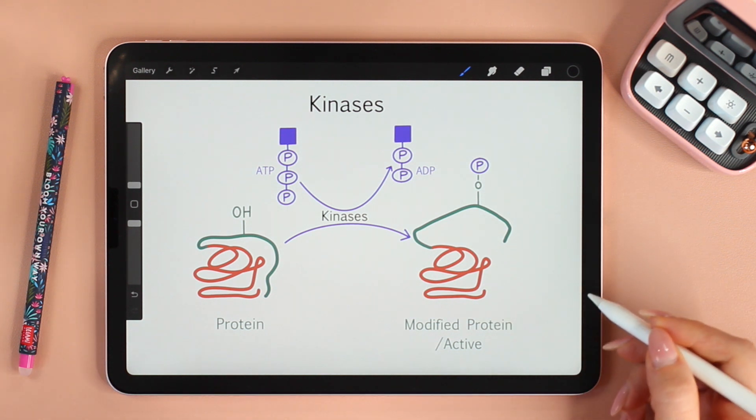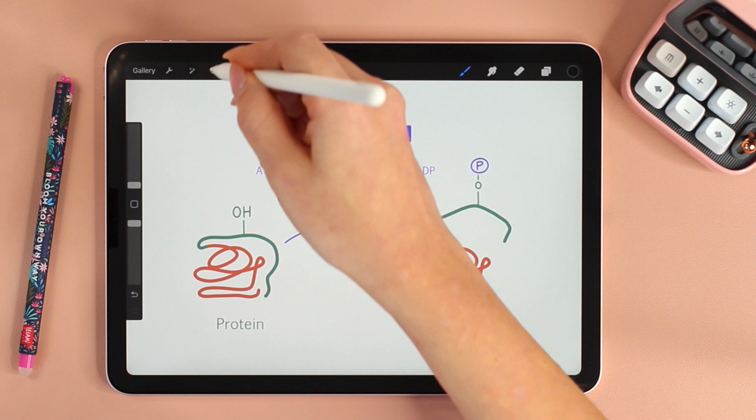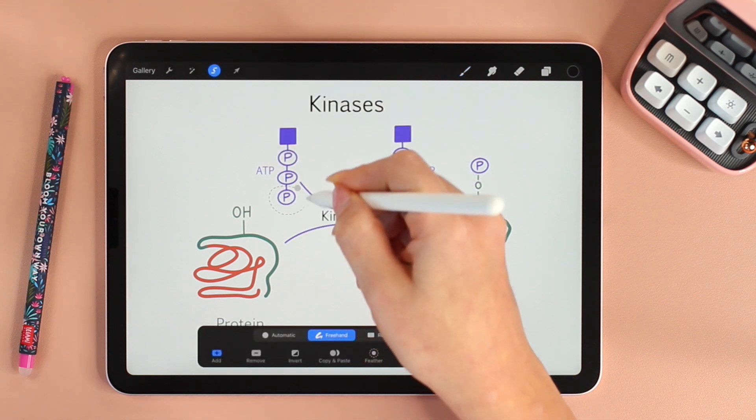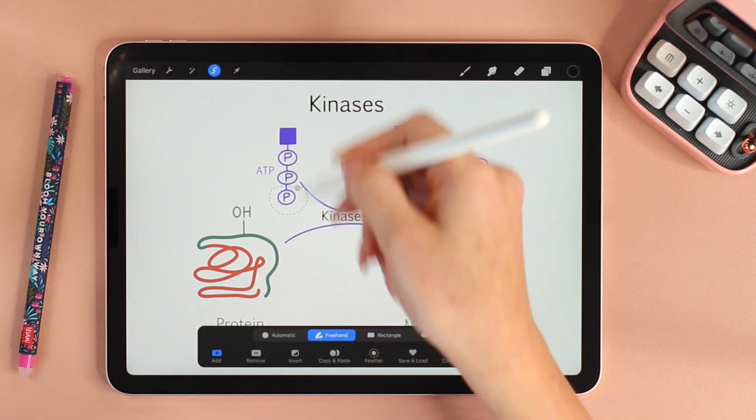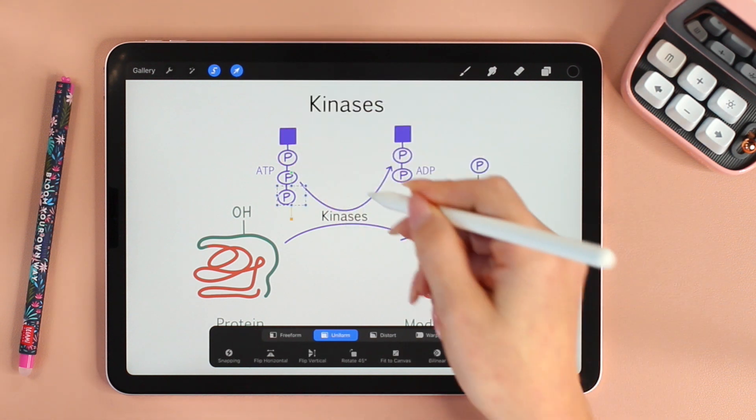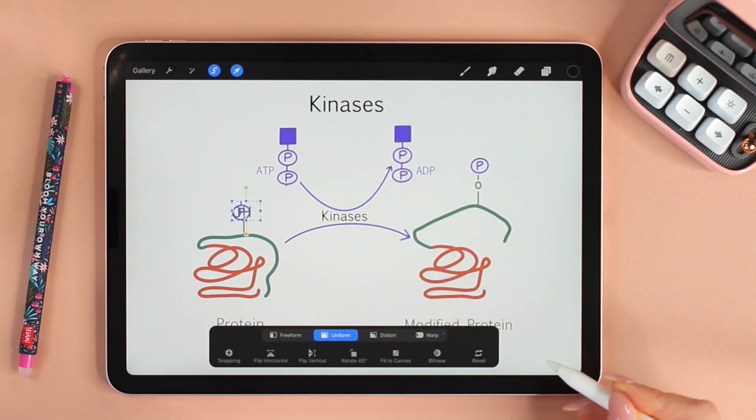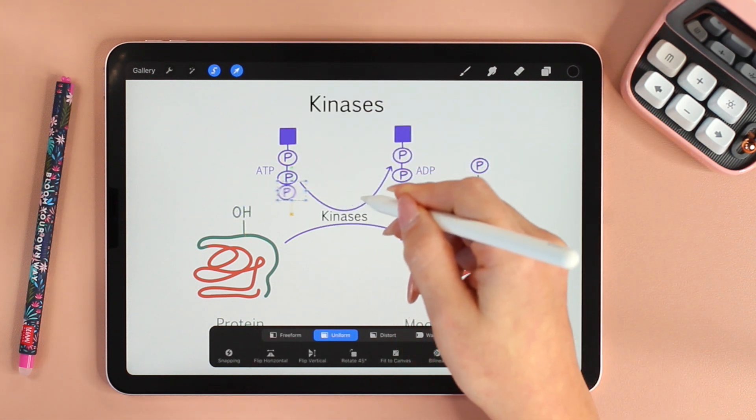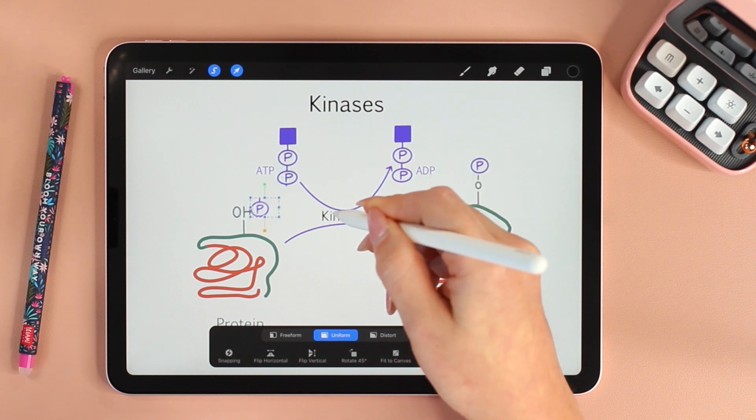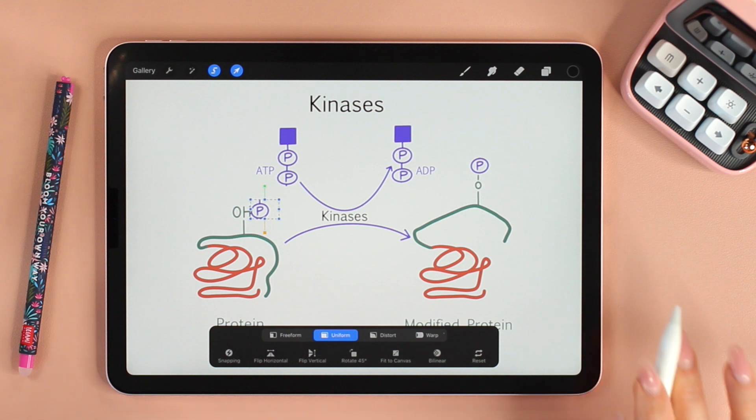What does a kinase do? A kinase adds a phosphate group from ATP to a protein. Why does it do so? Why does it transfer a phosphate from ATP to a protein? In order to activate it, and in some cases, to inactivate it.